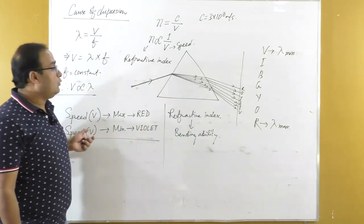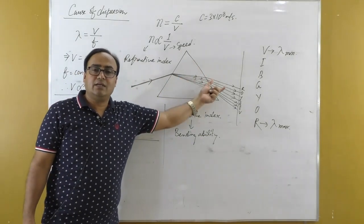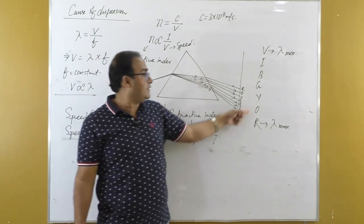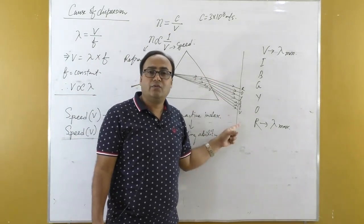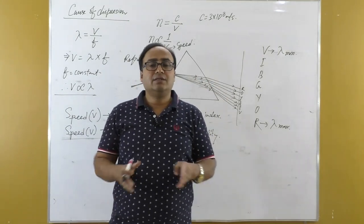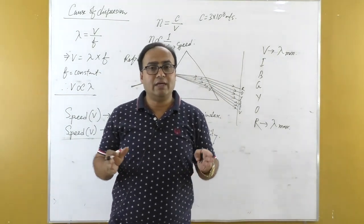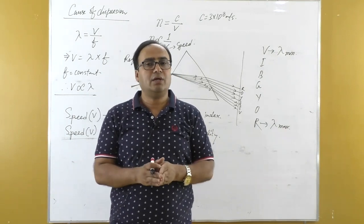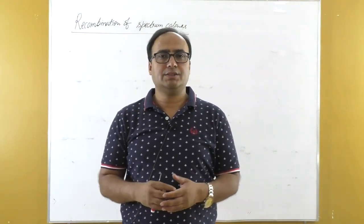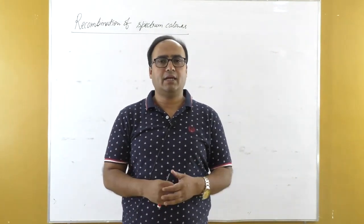So when we allow white light to pass through a prism, it splits into its seven constituent colors — that phenomenon is called dispersion. The band of seven colors obtained is called spectrum. We have discussed the reason behind dispersion of white light when it passes through a prism. Now we will discuss about recombination of spectrum colors as explained by Newton.